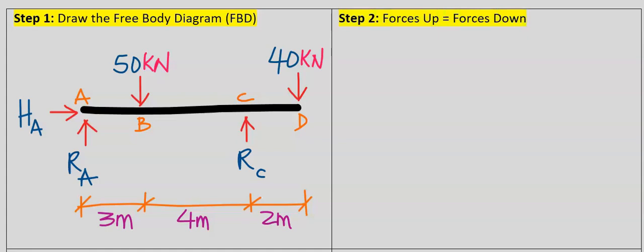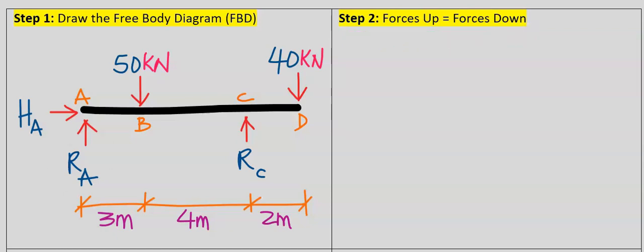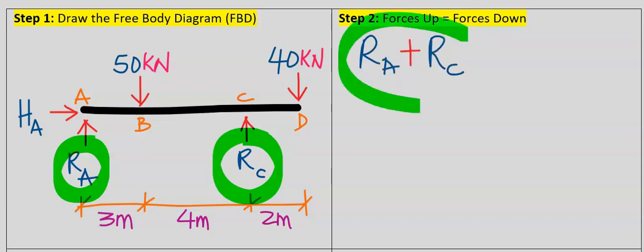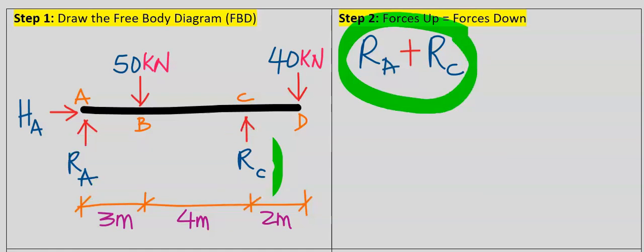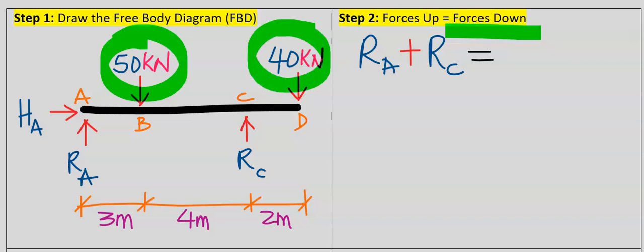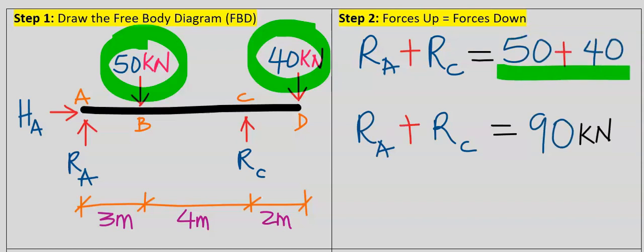Step number two: forces going up is equal to forces coming down. The reaction at point A and the reaction at point C are both going up. The forces pointing down are 50 kilonewton and 40 kilonewton respectively, which add up to 90 kilonewton.